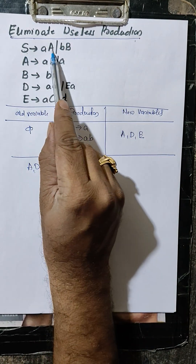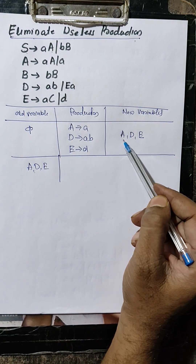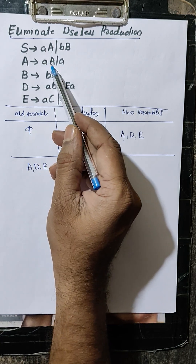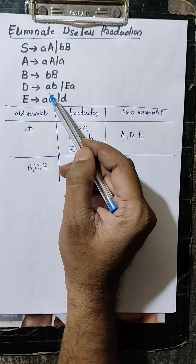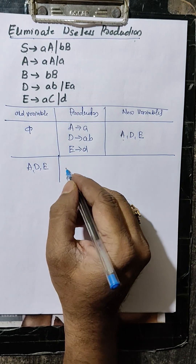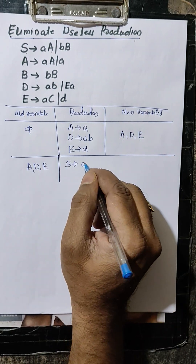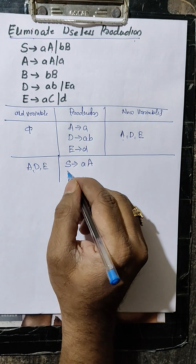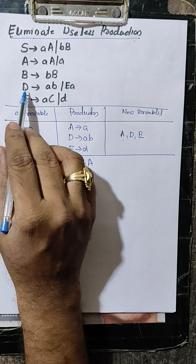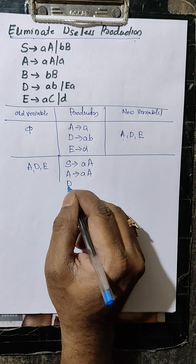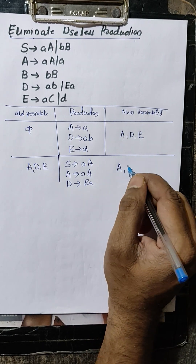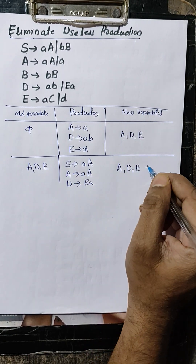If A produces a terminal, then S can produce a terminal — here A. E produces a terminal means D can produce a terminal. From this, S produces AA. The next production, A produces AA — we cannot terminate. And D produces A, so from this the new variable is S. Old plus new: old variable A, D, E; new variable is S.